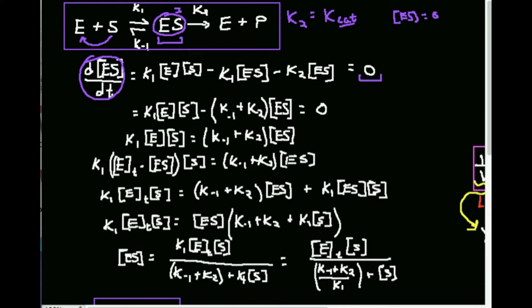Both ES terms can be factored out, giving: negative (K-1 plus K2) times [ES] plus K1 times [E] times [S] equals zero. Rearranging by moving the subtracted term to the other side: K1[E][S] equals (K-1 plus K2) times [ES].